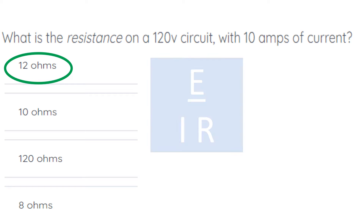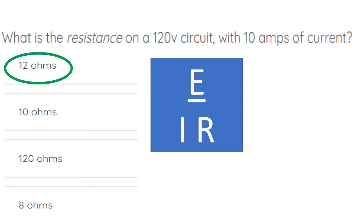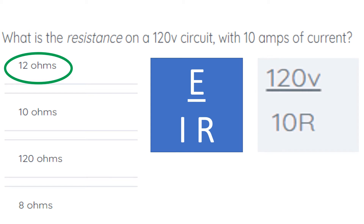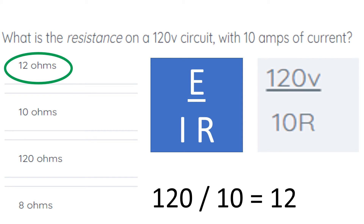For this, we're going to use our Ohm's Law formula. We just plug in what we know — we know the voltage and we know the current. We take 120 volts divided by 10 amps, and we end up with 12 ohms of resistance.